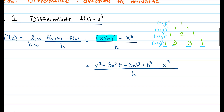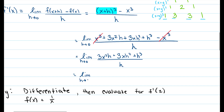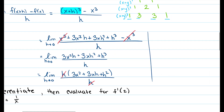Now we're going to cancel our terms — don't forget to write the limit in the front, the limit as h approaches zero. We get the limit as h approaches zero of three x squared h plus three x h squared plus h cubed, all divided by h. Now we factor out h, giving us the limit as h approaches zero of h times the quantity three x squared plus three x h plus h squared, all divided by h. Our h terms reduce, leaving us with the limit as h approaches zero of three x squared plus three x h plus h squared.